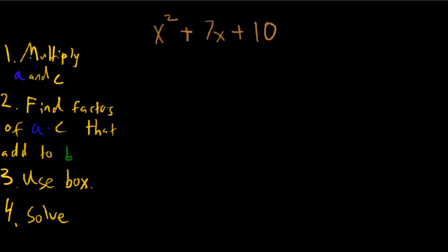Alright, so let's take a look at our steps. Multiply a and c. Well since a is 1, a times c is just c, so this is already a little bit easier because you don't have to do as much multiplication. So that's just 10.